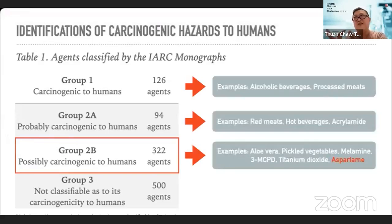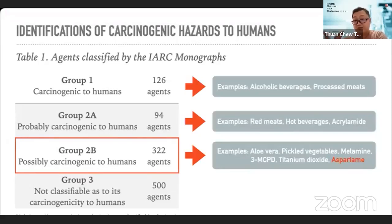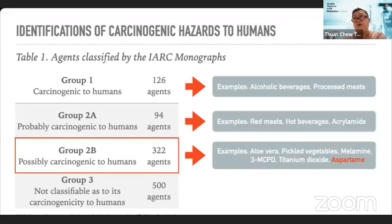So next time when you drink your coffee or tea, maybe take note of the temperature. Aspartame has recently been inducted into Group 2B, but pickled vegetables are also in the same group. For aspartame, we at least have a clear acceptable daily intake of 40 milligrams per kilogram body weight. As long as you follow this intake limit, you should be safe.